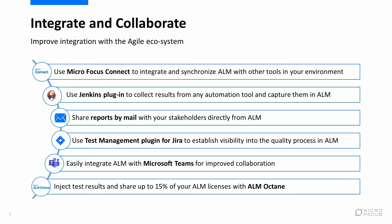We also improved the integration with the Agile ecosystem. With Micro Focus Connect, you can easily integrate ALM with a variety of tools in your tool chain. Using the enhanced Jenkins plugin, you can collect results from any automation tool and capture them in ALM. You can now share reports directly from ALM by mailing graphs from the analysis view. The new Test Management Plugin for Jira helps Jira users establish visibility into the quality process being managed in ALM without the need to log in to ALM.